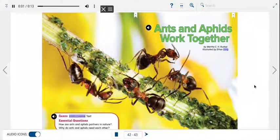Genre: Informational Text. Essential Questions: How are ants and aphids partners in nature? Why do ants and aphids need each other?